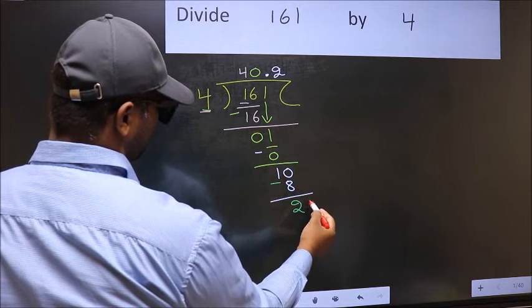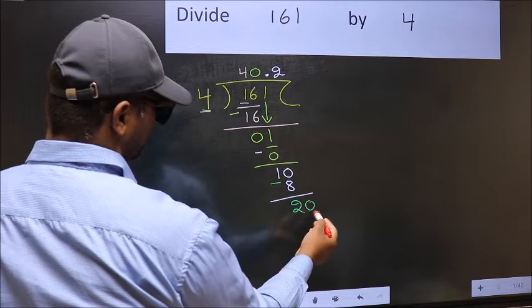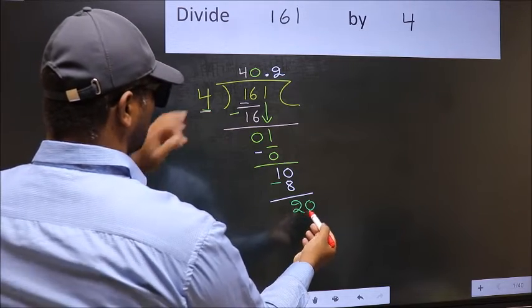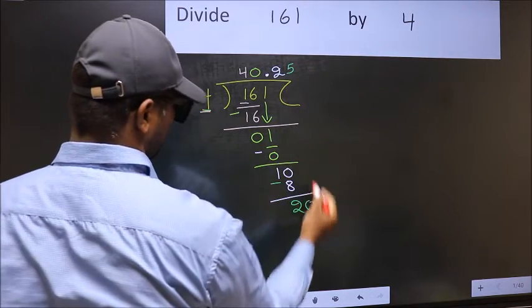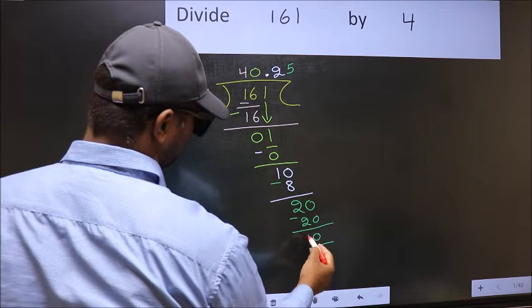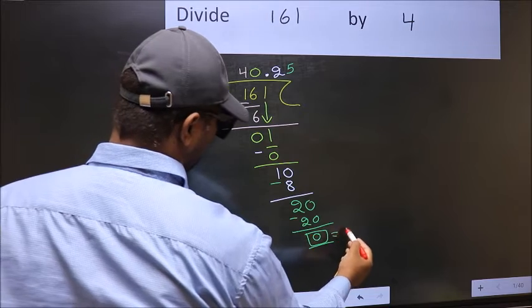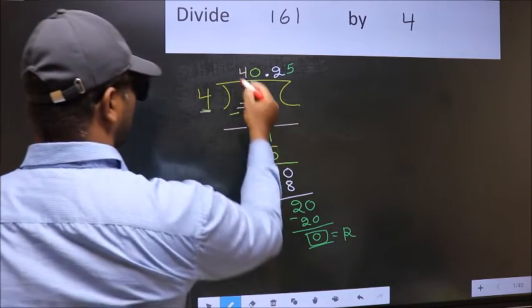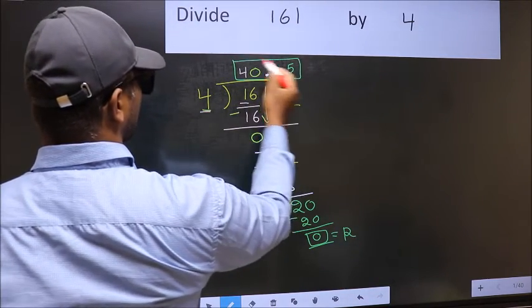We already have the decimal, so directly take 0. When do we get 20 in the 4 table? 4 times 5 is 20. Now you subtract, you get 0. So this is our remainder, and this is our quotient.